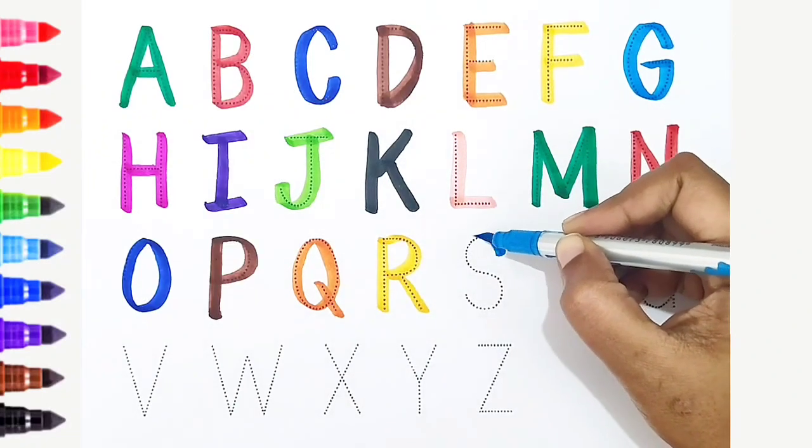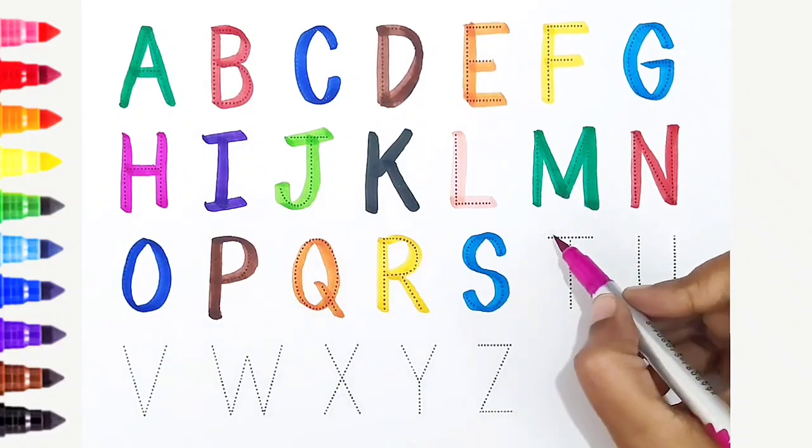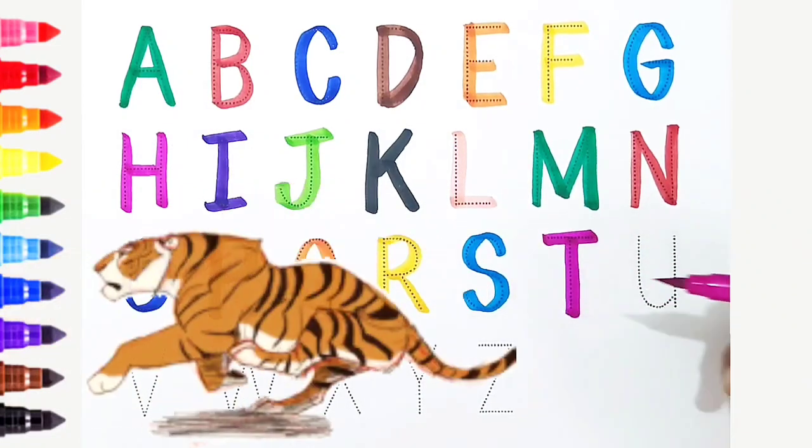S, light blue color. S is for sun. T, dark pink color. T is for tiger.